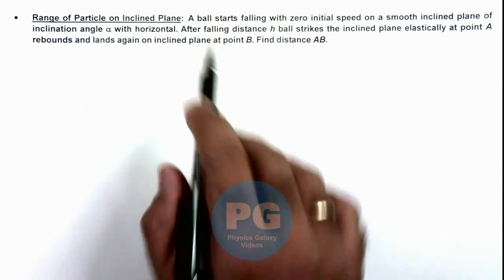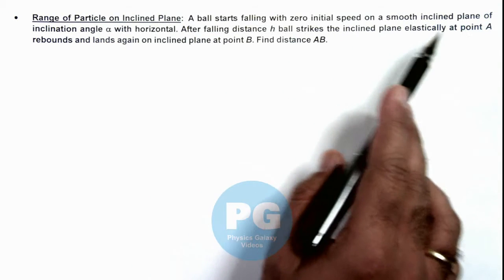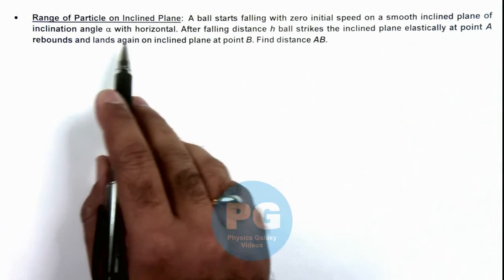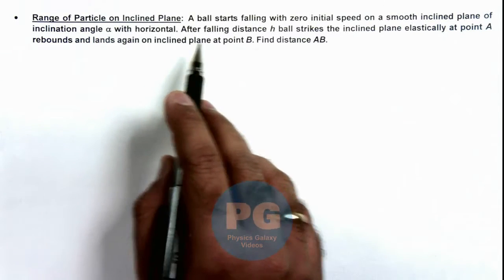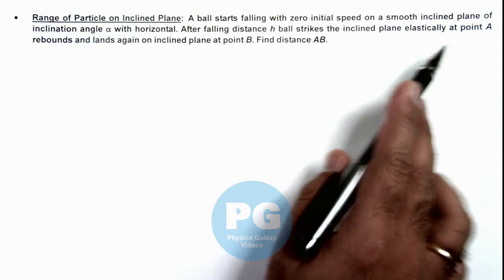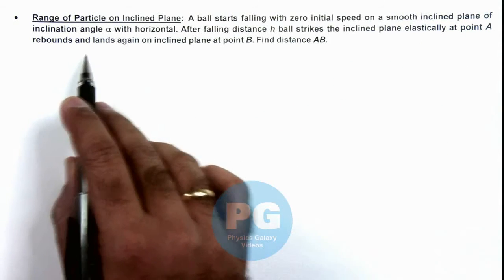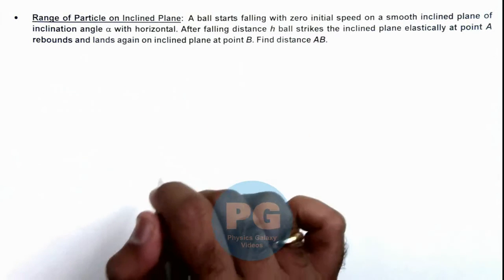The situation is given as: a ball starts falling with zero initial speed on a smooth inclined plane of inclination angle alpha with horizontal. After falling a distance h, the ball strikes the inclined plane elastically at point A, rebounds and lands again on the inclined plane at point B. We are required to find the distance AB.